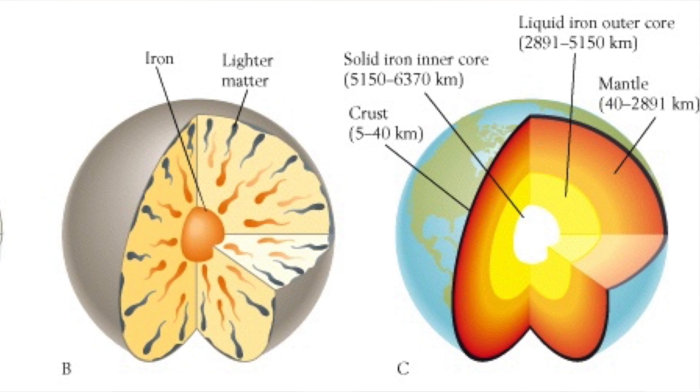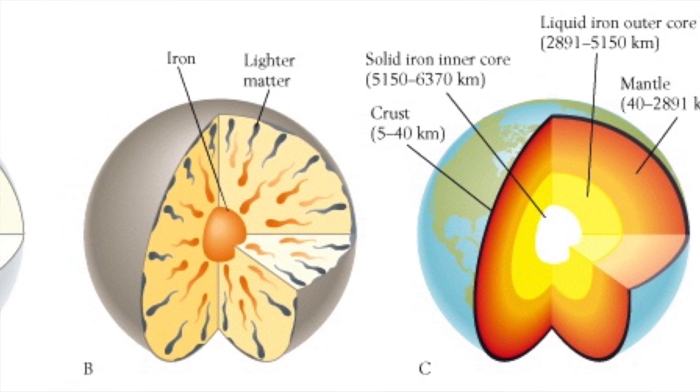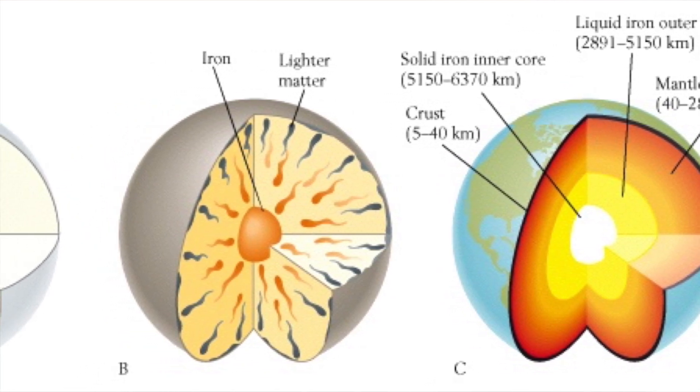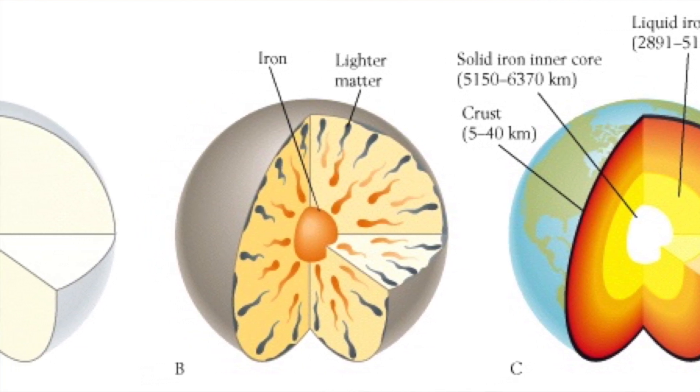How does plate tectonics work? So Earth is made of multiple shells. The primary ones are the crust, the mantle, the outer core, and the inner core.